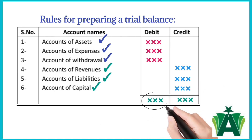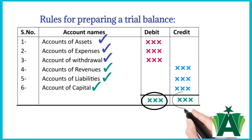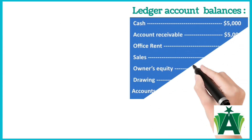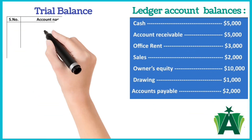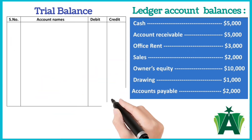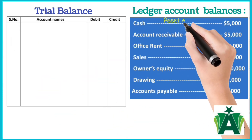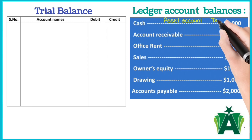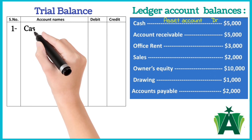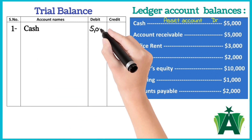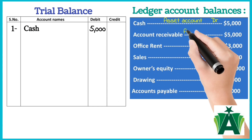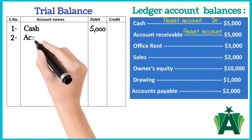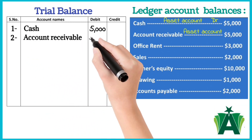These rules ensure the trial balance is formatted correctly. From the following ledger account balances, prepare a trial balance. Cash is an asset account. The normal balance of an asset account is debit balance, so it is recorded in the debit column. Accounts receivable is also an asset account and is recorded in the debit column of a trial balance.